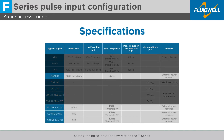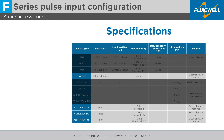A flow meter with NAMUR or active signals requires an external power supply for the sensor. This can be supplied by the F-Series PD, PF or PM power supply. The threshold of these signals is 50% of the supplied voltage.